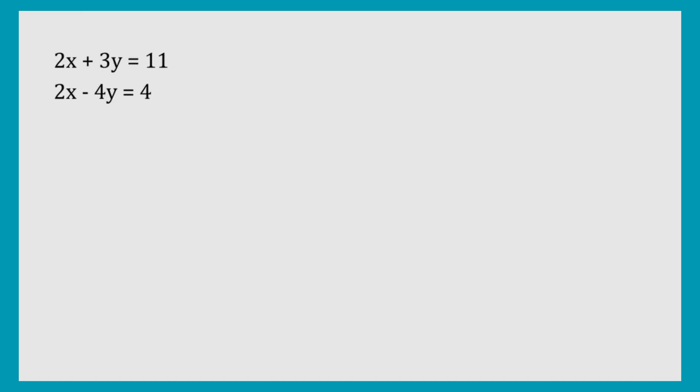With our first example, 2x plus 3y equals 11 and 2x minus 4y equals 4. We can see that the x's are the same, and that means we don't have to multiply any of the equations to carry on with the elimination method. So firstly, I'm going to label the two equations, and we don't need to multiply the equations by anything.